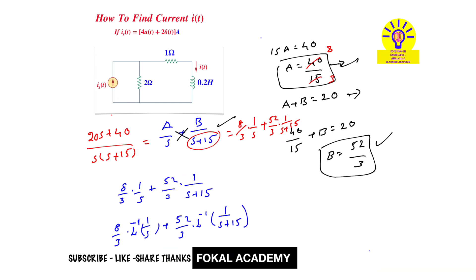8 by 3 times inverse Laplace of 1 by S plus 52 by 3 times inverse Laplace of 1 by S plus 15. We know that Laplace transform of U of T is 1 by S, so inverse Laplace of 1 by S is U of T. And Laplace of e power minus A T is 1 by S plus A. So A here is 15, so it becomes e power minus 15 T times U of T.